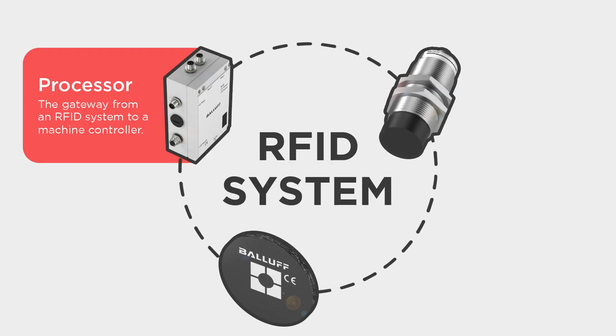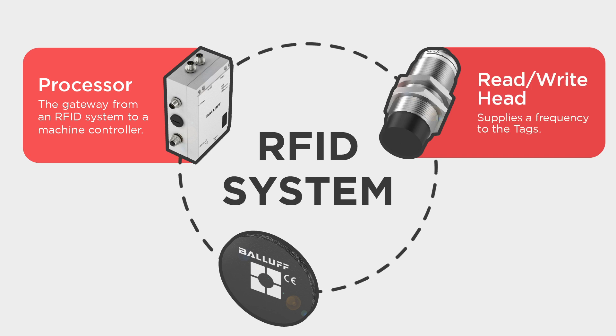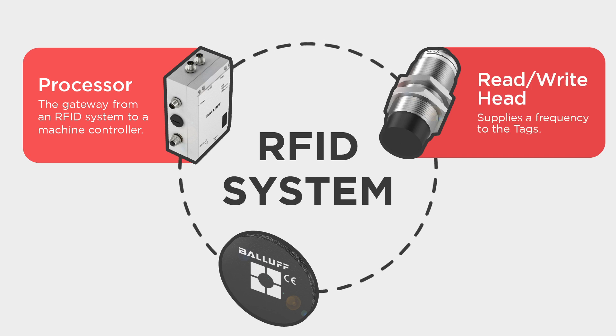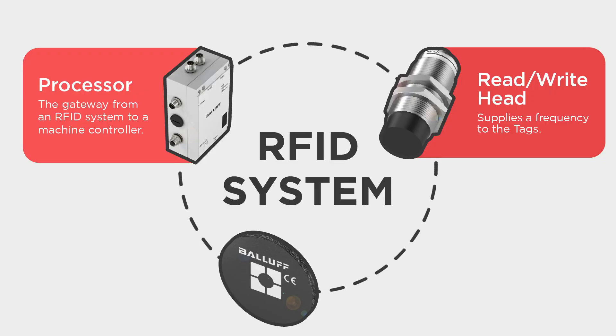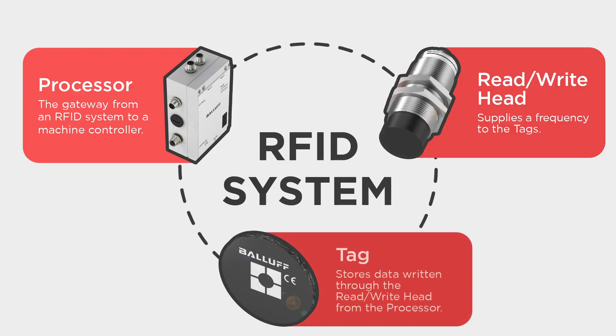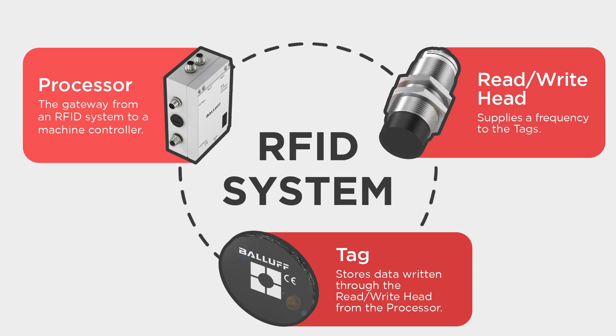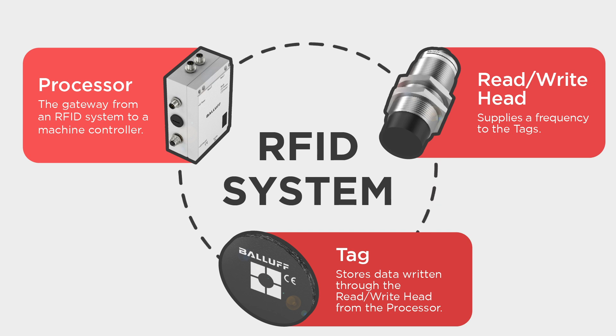Moving along to the read-write heads, these are also known as antennas and they simply supply a frequency to the RFID tags, which powers the tags to be read or written to. Read-write heads are offered in various form factors and are determined by the processor unit the RFID system is using and what RFID frequency is needed. Lastly we have the RFID tag. The tag is what stores all the data which is being written through the read-write heads from the processor unit. Tags vary in size and form factors, which will impact the sensing range and how much data can be written to the tags.